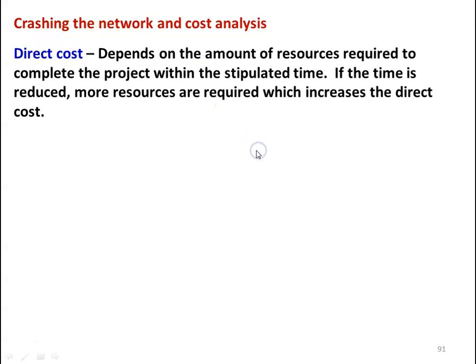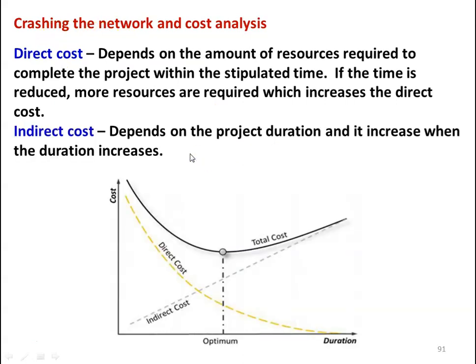Crashing the Network and Cost Analysis. For any project, cost and time are involved. Resources directly involve cost. There are two types of cost in project analysis: direct cost and indirect cost. The direct cost depends on the amount of resources required to complete the project within the stipulated time. If the time is reduced, more resources are required, which increases the direct cost. The resources may be men, machine, or material. When you reduce the time required for completion of the project work by crashing, the amount of resources required will increase, causing an increase in direct cost.